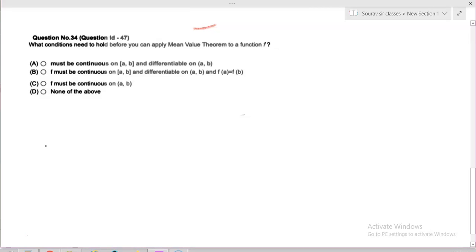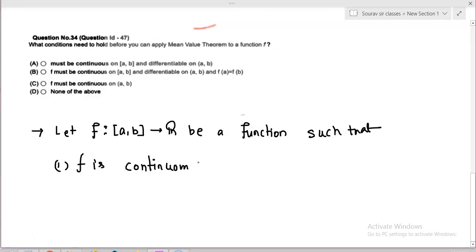Let us recall the Mean Value Theorem. Let f: [a,b] → ℝ be a function such that condition one: f is continuous on closed interval [a,b].